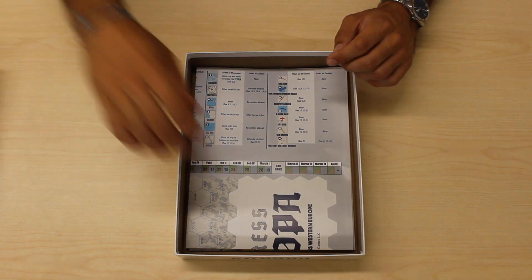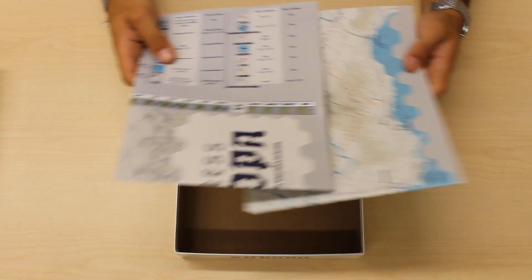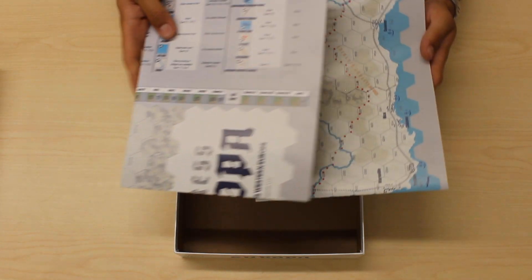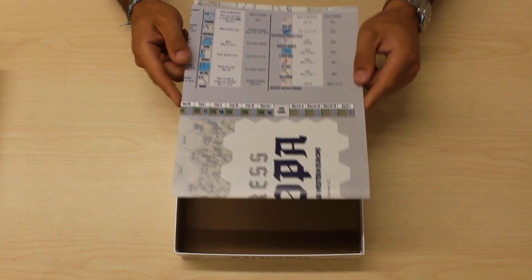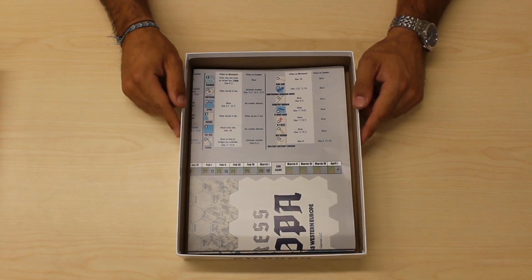And lastly, we have two maps. Together, they add up to a 43 by 34 inch map, which I will lay out for you so you can take a closer look.